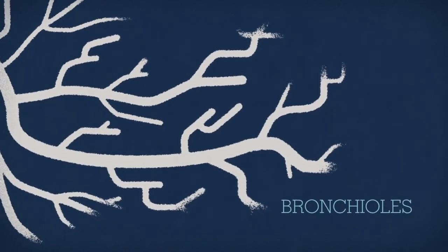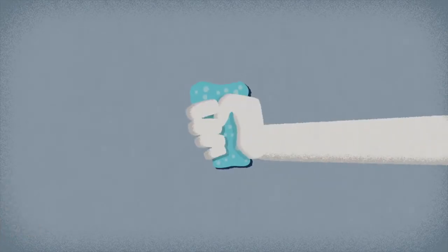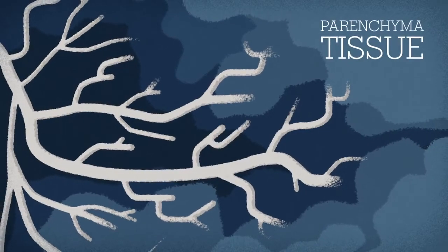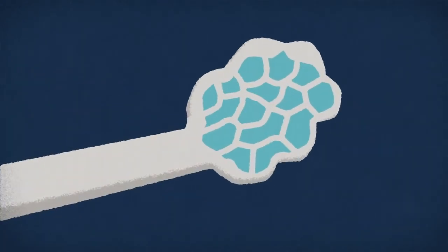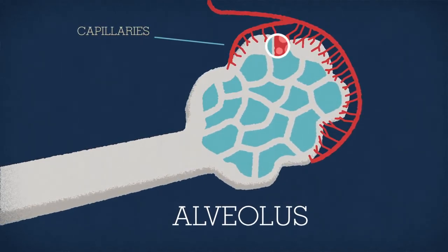It's tempting to think of the lungs as huge balloons, but instead of being hollow, they're actually spongy inside, with the bronchioles running throughout the parenchyma tissue. At the end of each bronchiole is a little air sac called an alveolus, wrapped in capillaries full of red blood cells containing special proteins called hemoglobin.